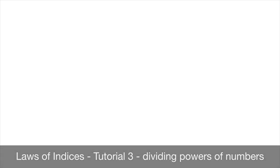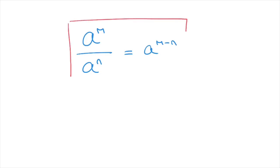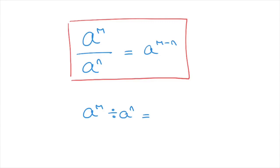We now learn how to deal with division of powers of numbers, beginning with the case of powers of the same base. This leads to the formula: a raised to the power of m over a to the power of n equals a raised to the power of m minus n. In other words, we subtract the power on the denominator from the power on the numerator. Both fraction and division notation express exactly the same thing.